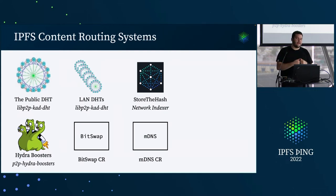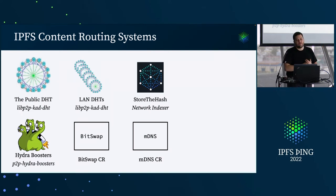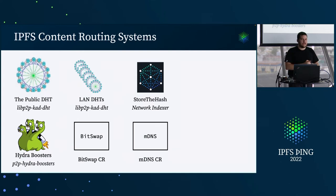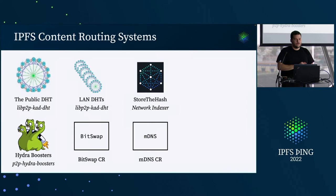Many private networks out there exist today that run their own separate DHTs. There are hydra boosters that support the public DHT — not a separate content routing system but a subsystem that helps the public DHT. There's also a bitswap content routing tool; there are ways of enhancing bitswap where you use wants within bitswap itself to optimistically end up connected to peers that have the content or are connected to somebody that has the content.